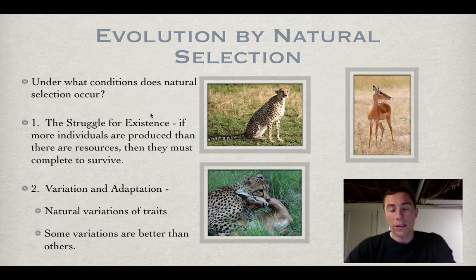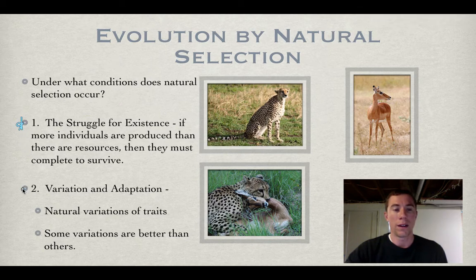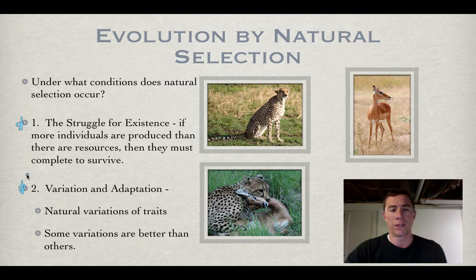We know that Charles Darwin talked about evolution, but how does evolution actually occur? This is what's called natural selection. There are two main points about when natural selection actually occurs. The first point, what Darwin called, was the struggle for existence. He said that if more individuals are produced than there are actual resources, then those individuals must compete to survive.